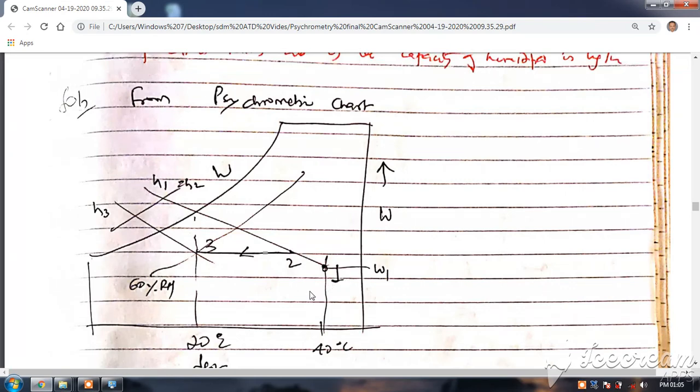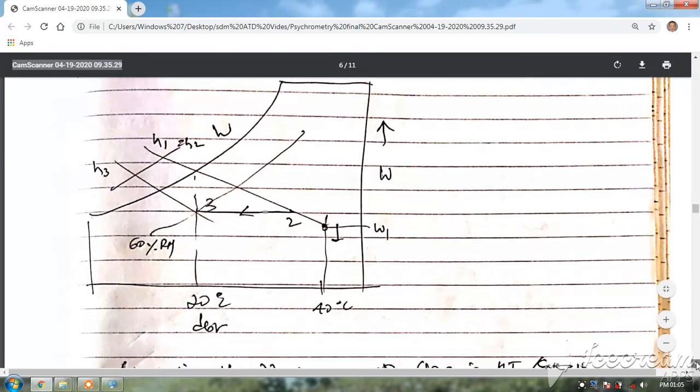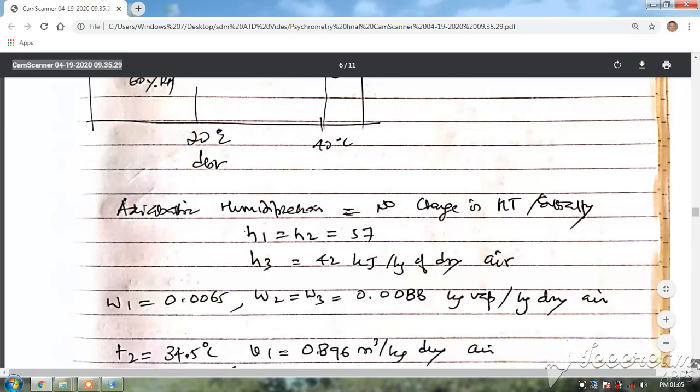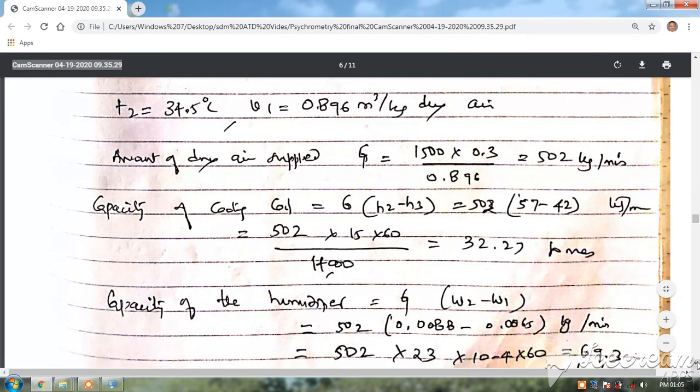And then you can find out first by finding the specific volume at the outdoor condition, you will find out the mass flow rate of the air in kg per hour or kg per minute or kg per second. Accordingly, once you find out the mass flow rate of the air, you can calculate the cooling coil capacity and dehumidifier capacity. Please do these problems at home and be confident about solving the problems on psychometry. Thank you.